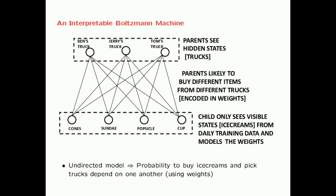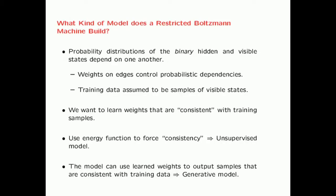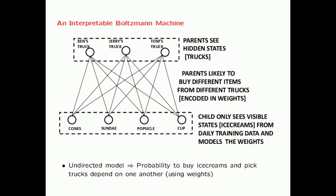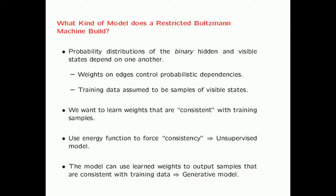Given a lot of examples of these four bits, we want to learn weights that are consistent with the training sample. The way this consistency is enforced is with the use of an energy function. This is an unsupervised model, and once the weights have been learned, they can be used to output samples consistent with the training data—making it a generative model.